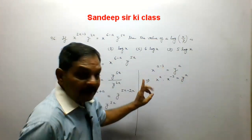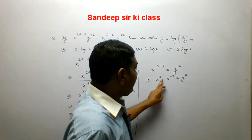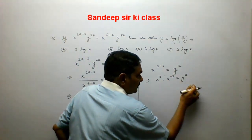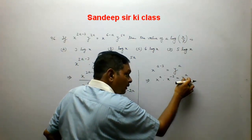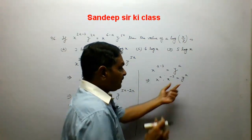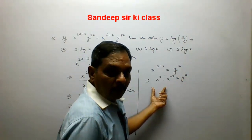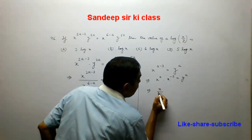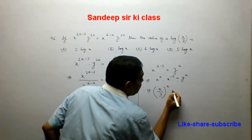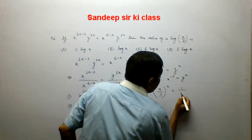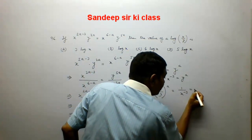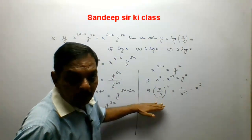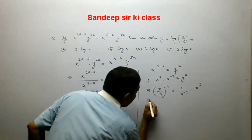Cross multiplying, x to the power a upon y to the power a equals 1 upon x to the power minus 3, which can be written as x to the power 3. So (x upon y) to the power a equals x to the power 3. Now taking log on both sides.